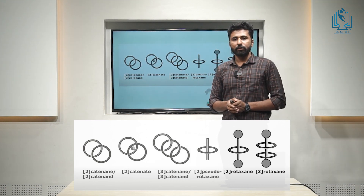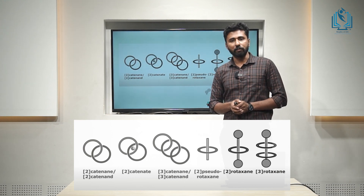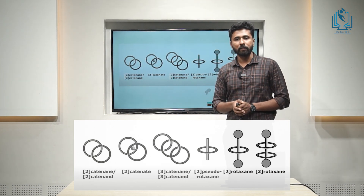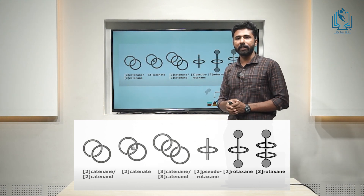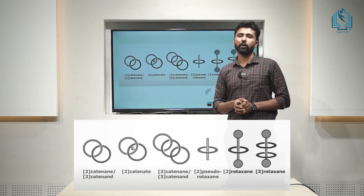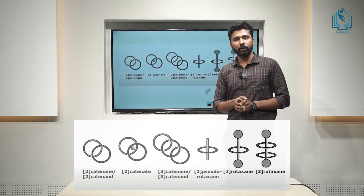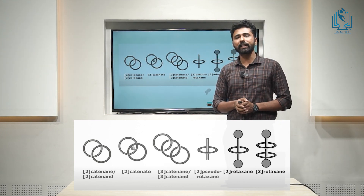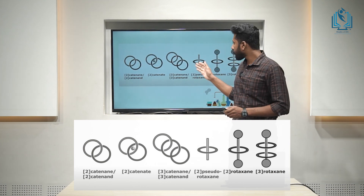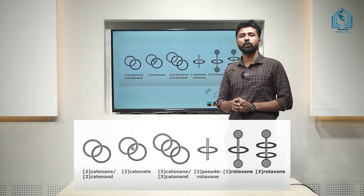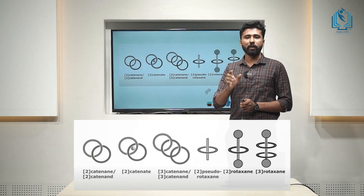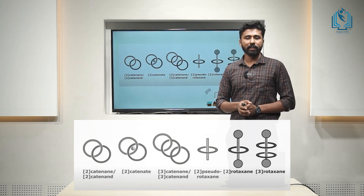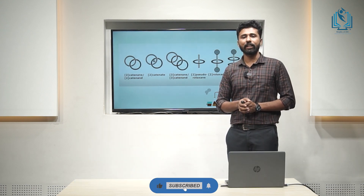Now, we could name the rotaxane. In the first example, there is a linear molecule which is threaded through the macrocyclic ring, but the end is not terminated with a bulky group. So this can be named as N-pseudorotaxane, where N stands for the number of macrocyclic rings plus the linear structure. The pseudorotaxane is the precursor of both catenanes and rotaxanes. In the fourth example, you could see a rotaxane named as 2-rotaxane — two stands for one macrocyclic ring and one linear structure. In the last example, there are two macrocyclic rings and one linear structure, so it is named as 3-rotaxane.